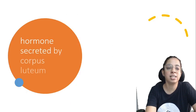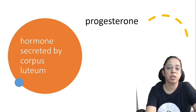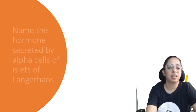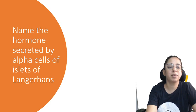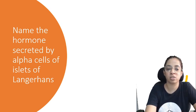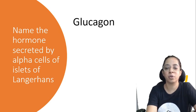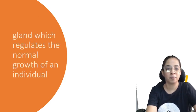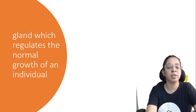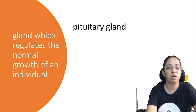Next: the hormone secreted by the corpus luteum — progesterone. Name the hormone secreted by the alpha cells of the islets of Langerhans — glucagon. You are doing really well! The gland which regulates the normal growth of an individual — pituitary gland.